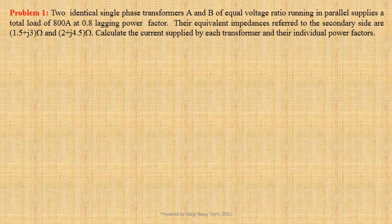Two identical single-phase transformers A and B of equal voltage ratio running in parallel supply a total load of 800 ampere at 0.8 lagging power factor. Their equivalent impedances referred to the secondary side are 1.5 plus J3 ohm and 2 plus J4.5 ohm. We have to determine the current supplied by each transformer and their individual power factors. Let us first write down the given data.